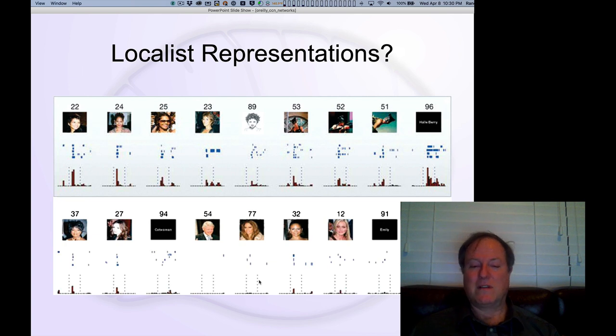You can see remarkably that this neuron responds to a wide range of different representations of Halle Berry, but also, critically, some responses to other people who are related in various different ways. Famous people, women.